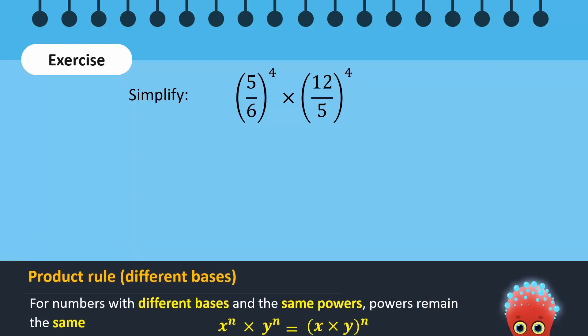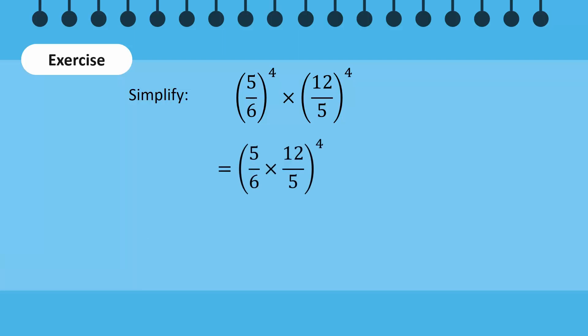Thus, in this example, 5 over 6 will be multiplied by 12 over 5 and power 4 will remain the same. After simplifying this, we get 16 as the answer.